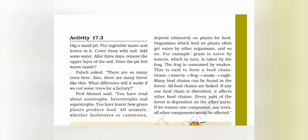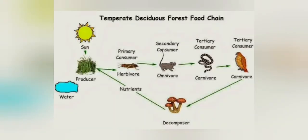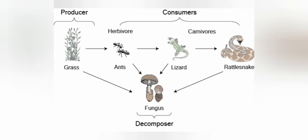For example, grass is eaten by insects, which in turn is eaten by the frog. The frog is consumed by snakes, forming a food chain: grass, insects, frog, snake, eagle. Many food chains can be found in the forest. All food chains are linked, and if any one food chain is disturbed, it affects the other food chains.